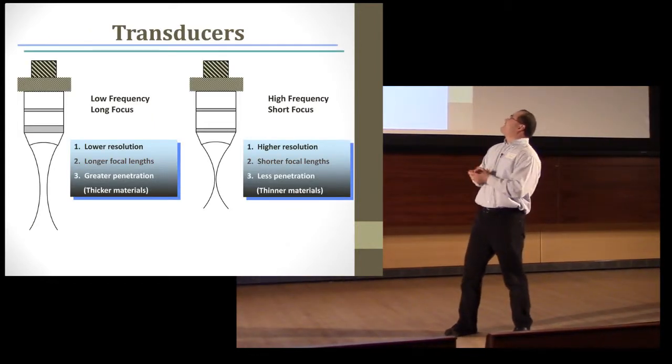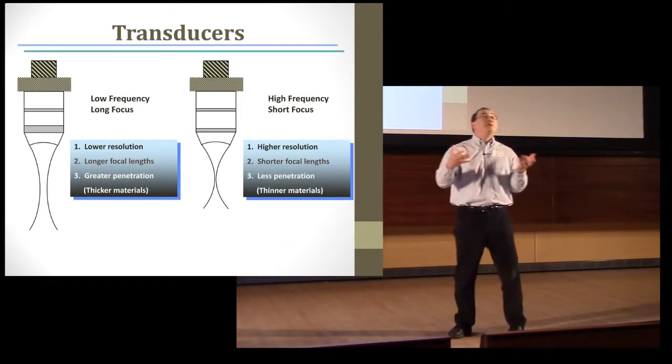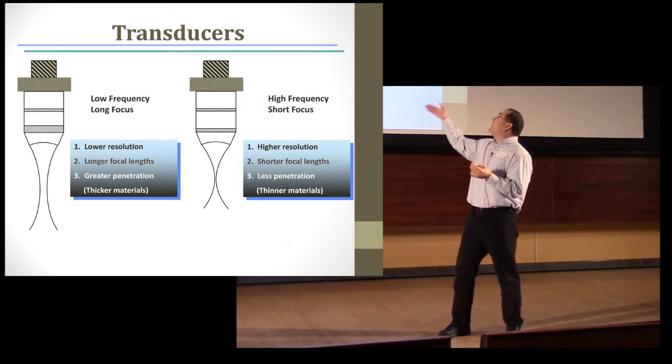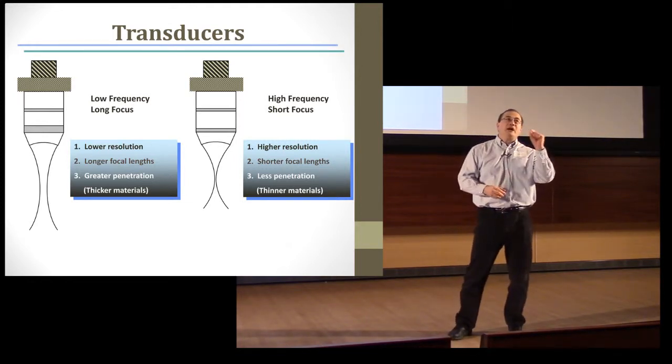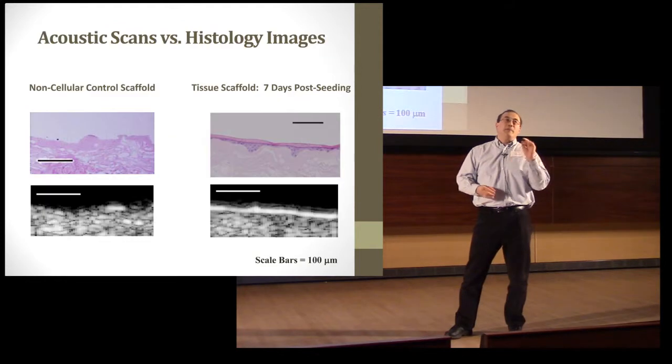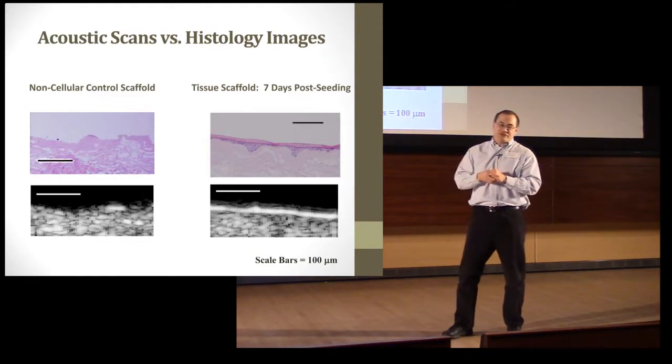Now the difference between transducers: a conventional transducer used in OB labs uses low frequency and longer focal lengths, therefore thicker materials. Ours, in contrast, is the opposite, very thin. We're not able to have very good penetration, but we can very easily image cells and tissues.